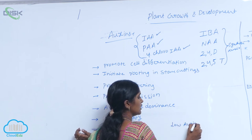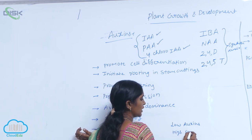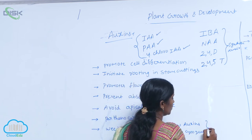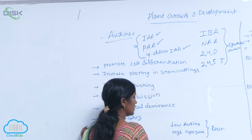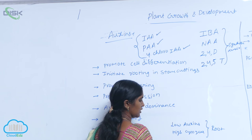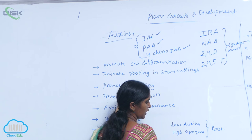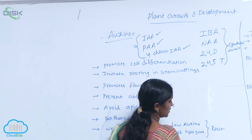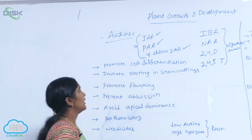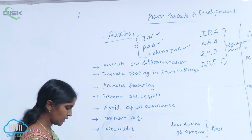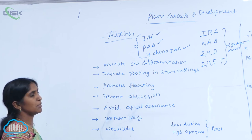Low concentration of auxins and high concentration of cytokinins promotes root formation. And high concentration of auxins and low concentration of cytokinins promotes shoot formation. This means they promote cell differentiation and organogenesis.